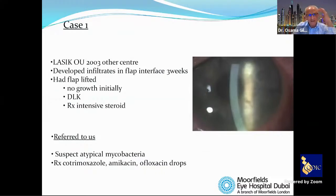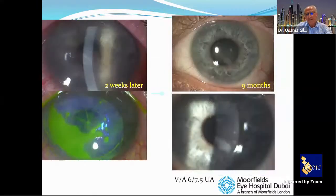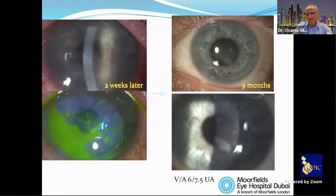A case from 2003: a patient three weeks post-LASIK with infiltrate — treated as DLK with steroids but did not respond. Referred to us, we suspected atypical mycobacteria. Using chloramphenicol, amikacin, and ciprofloxacin (fourth-generation not yet available in the UK at that time), there was no improvement and the infiltrate began melting. We lifted the flap again, soaked with ciprofloxacin, and created an epithelial defect for better antibiotic penetration. After four weeks of culture, we identified the organism — initially presumed Nocardia but confirmed as mycobacteria chelonae. The patient slowly improved over nine months with a final vision of 6/7.5 — a good outcome for mycobacteria infection.